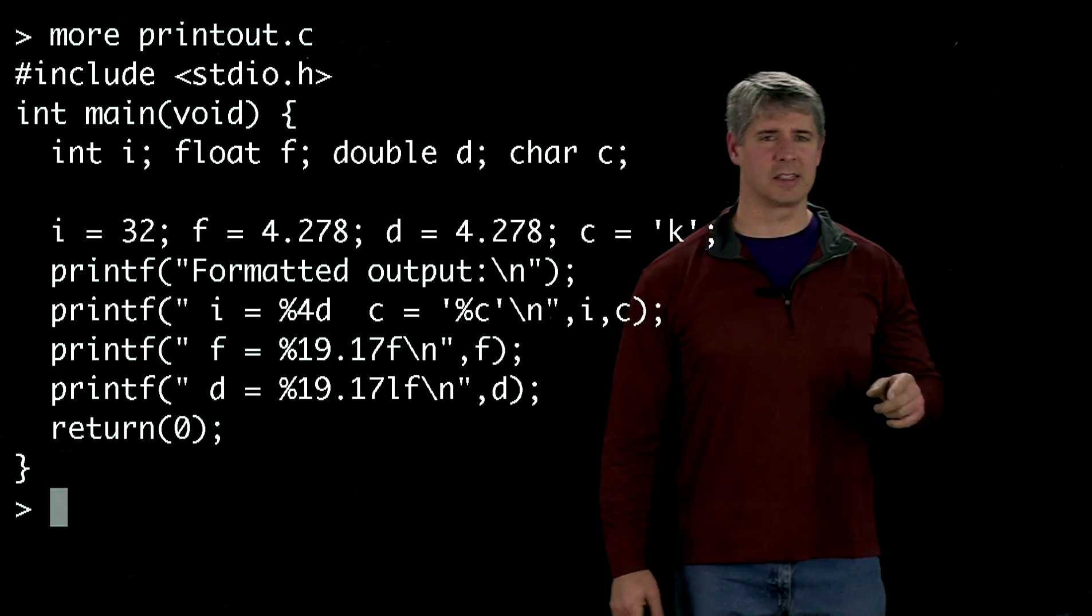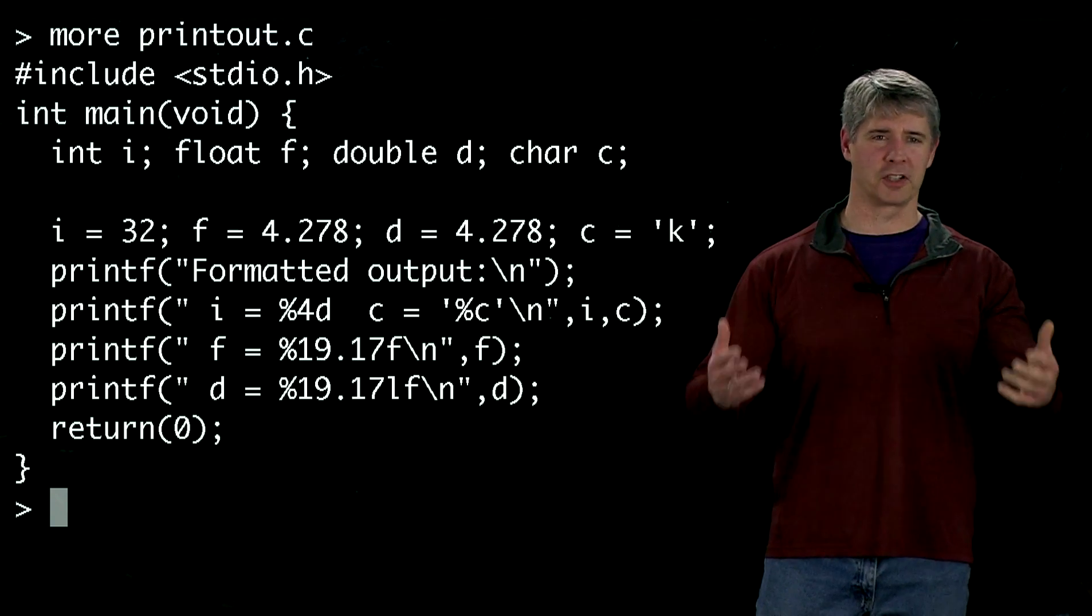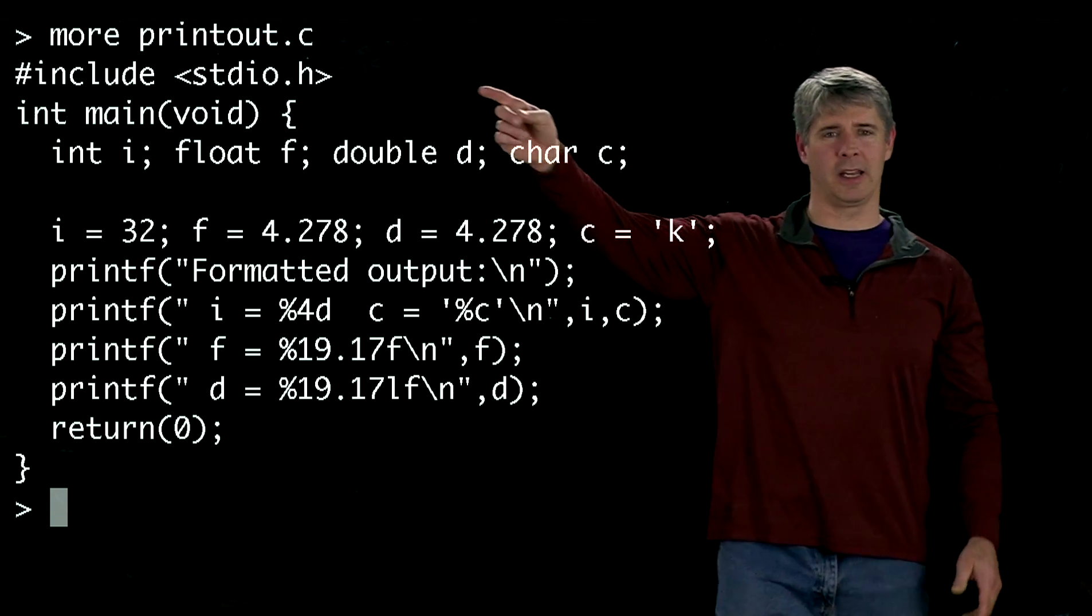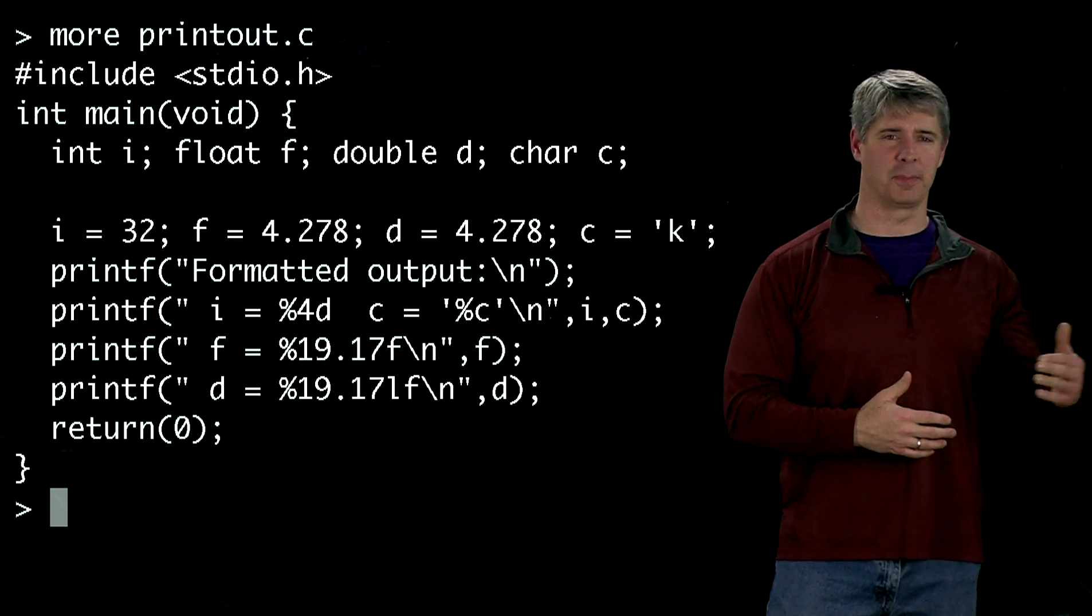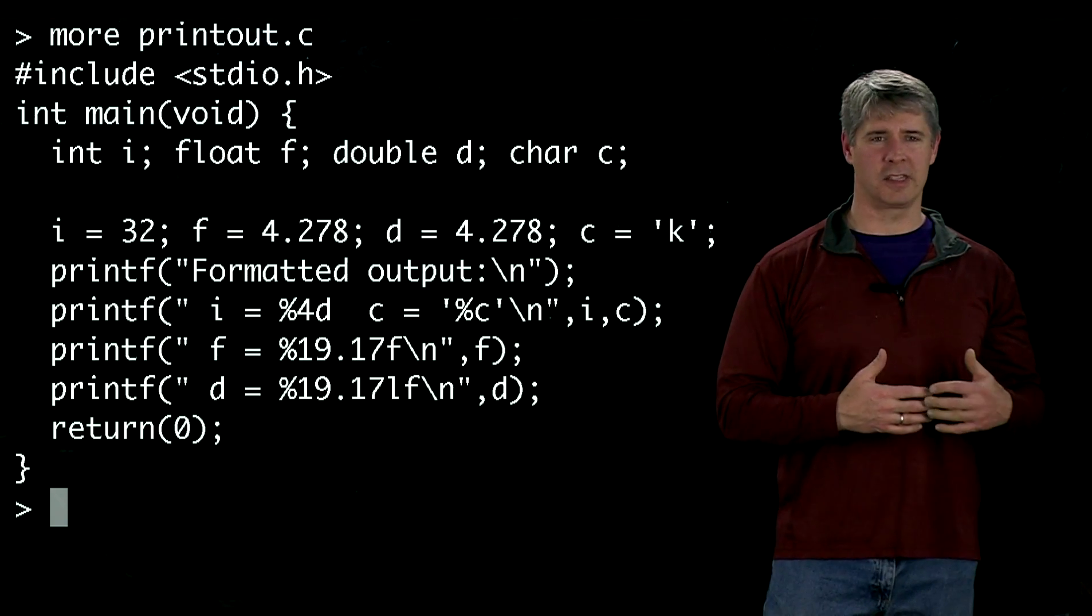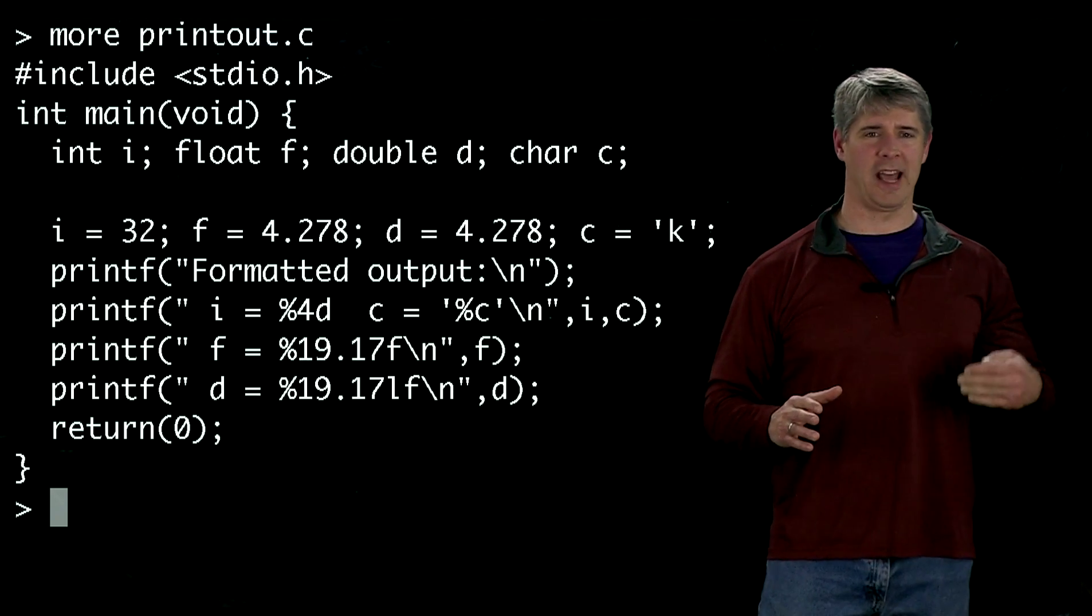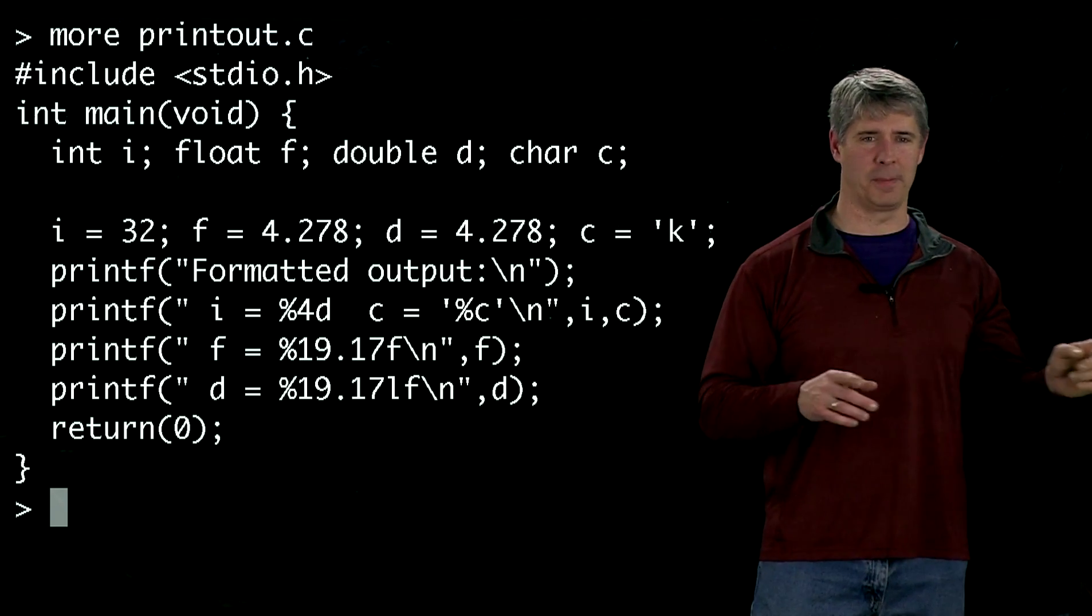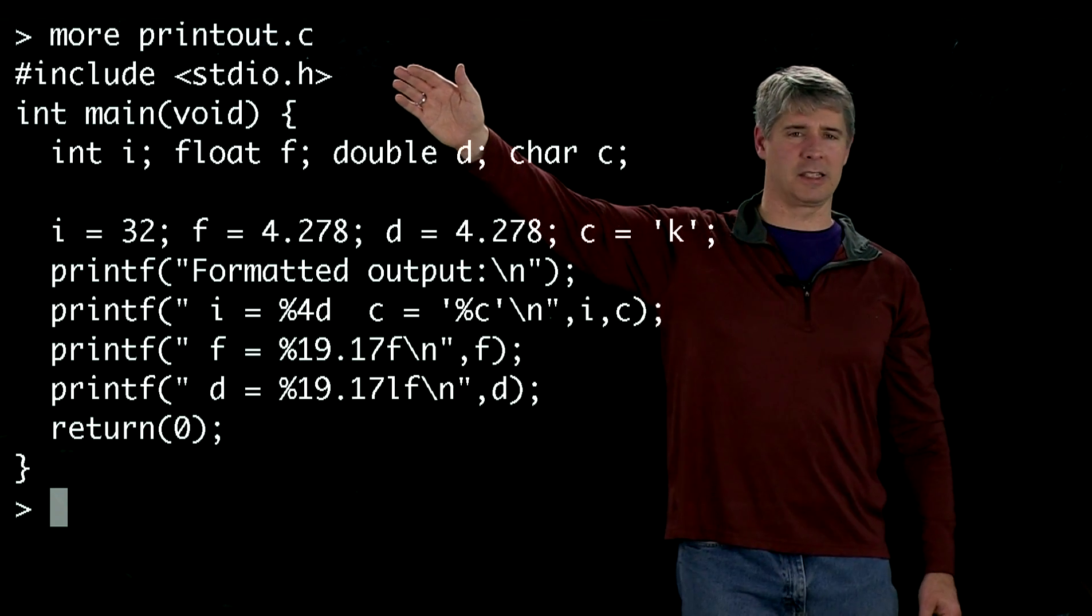What that's saying is that this program is going to use a printing function to the screen, and so it's telling our compiler to give me access to the library that allows me to print things to the screen. This doesn't come in the basic vanilla C implementation. It's an added library to allow you to print out depending on the type of screen that you have. So that's the first line - it's going to tell us that we can print.